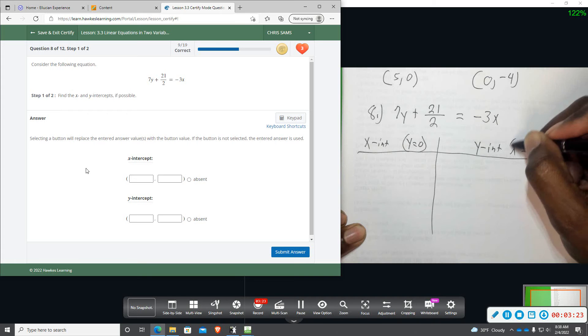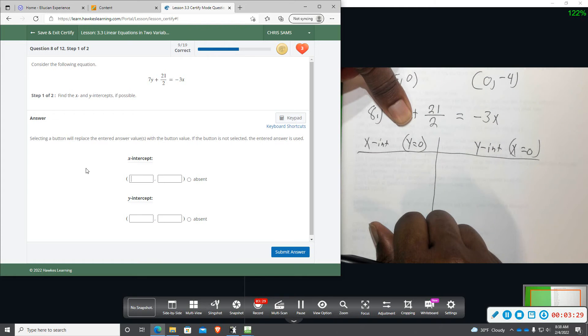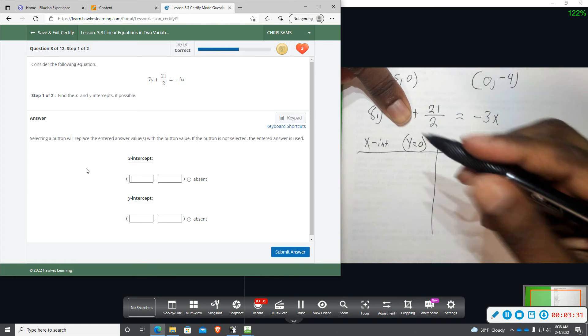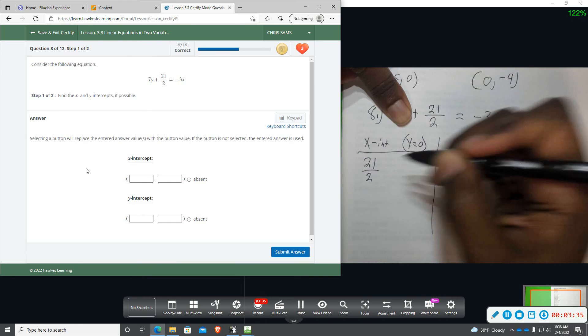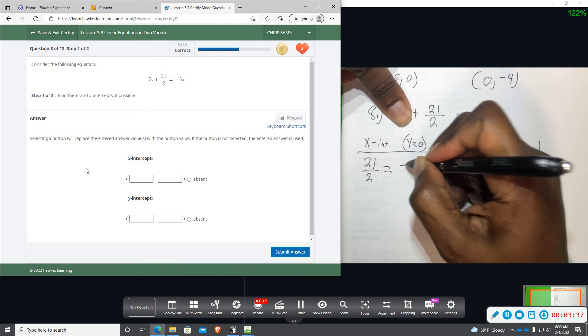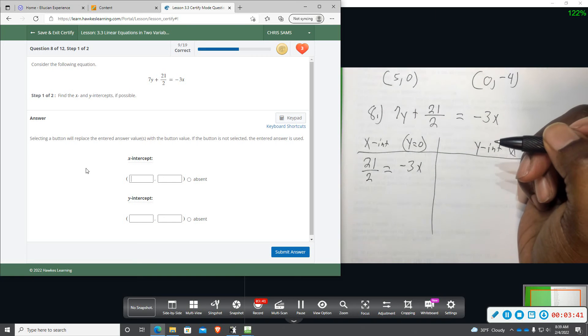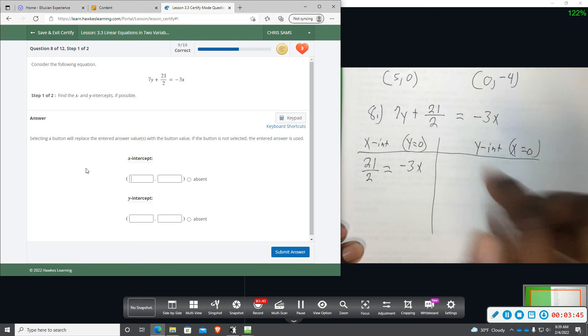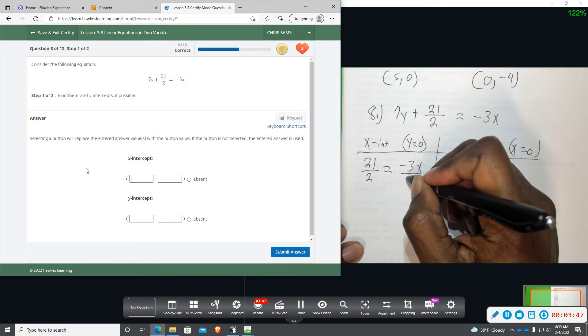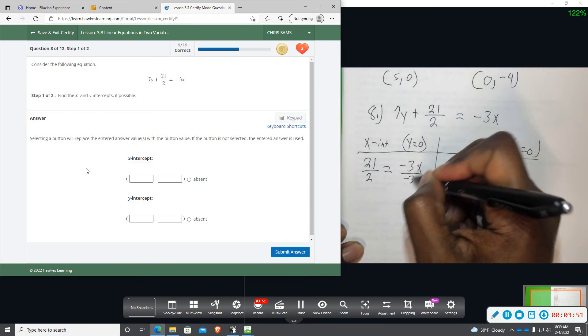So if we plug a 0 for y, we lose that term, and we have this left: 21 over 2 equals negative 3x. So all we have to do is divide by negative 3 to get x by itself. Now over here, when we divide by negative 3, since we already have this fraction...